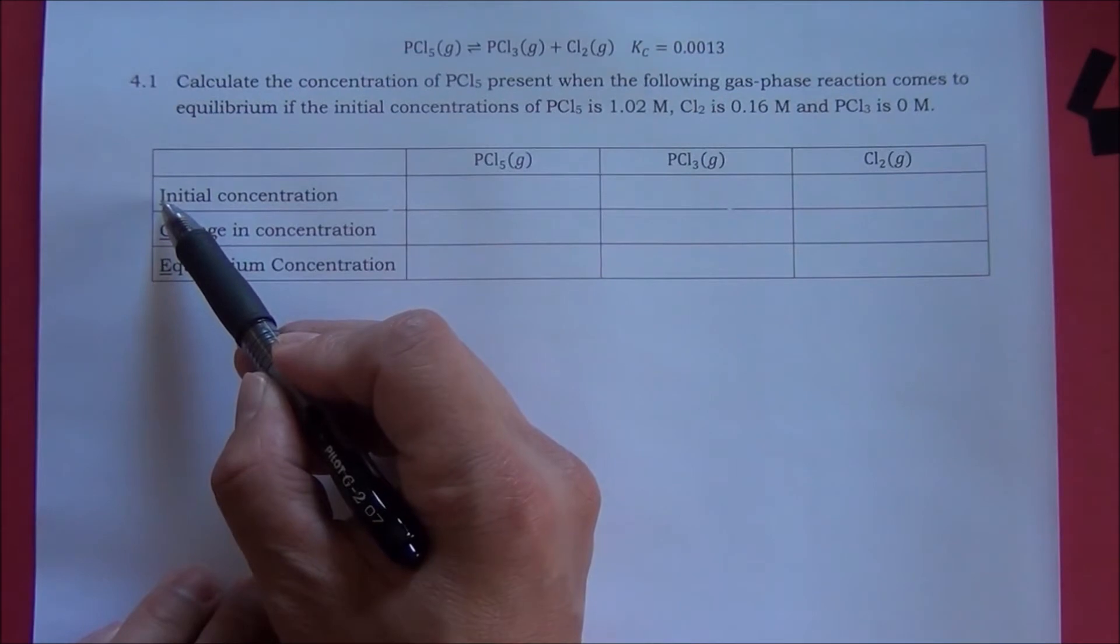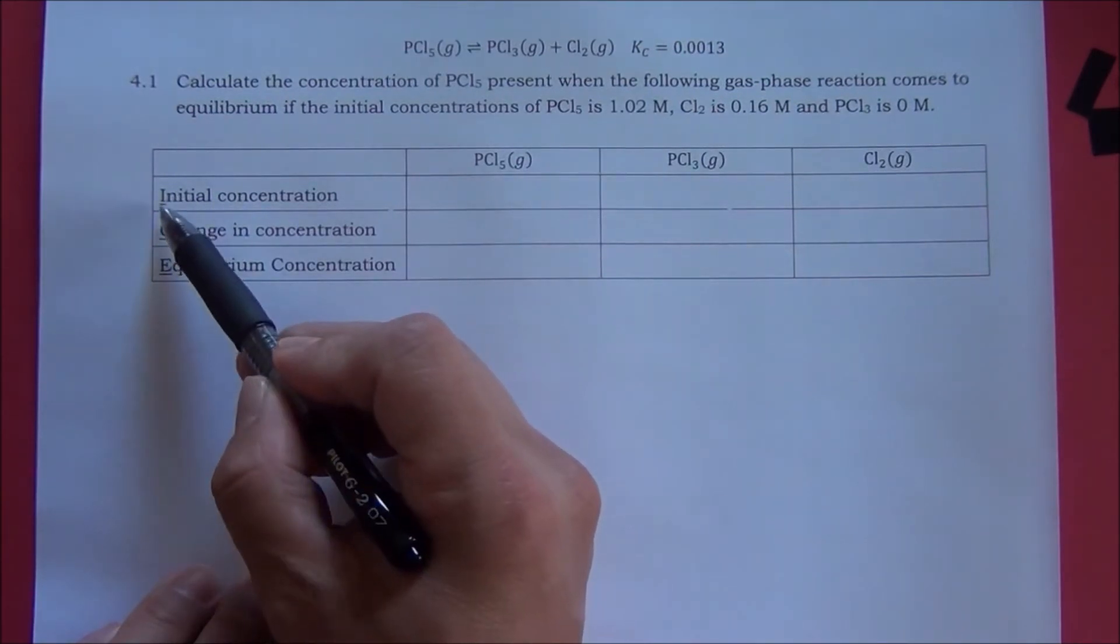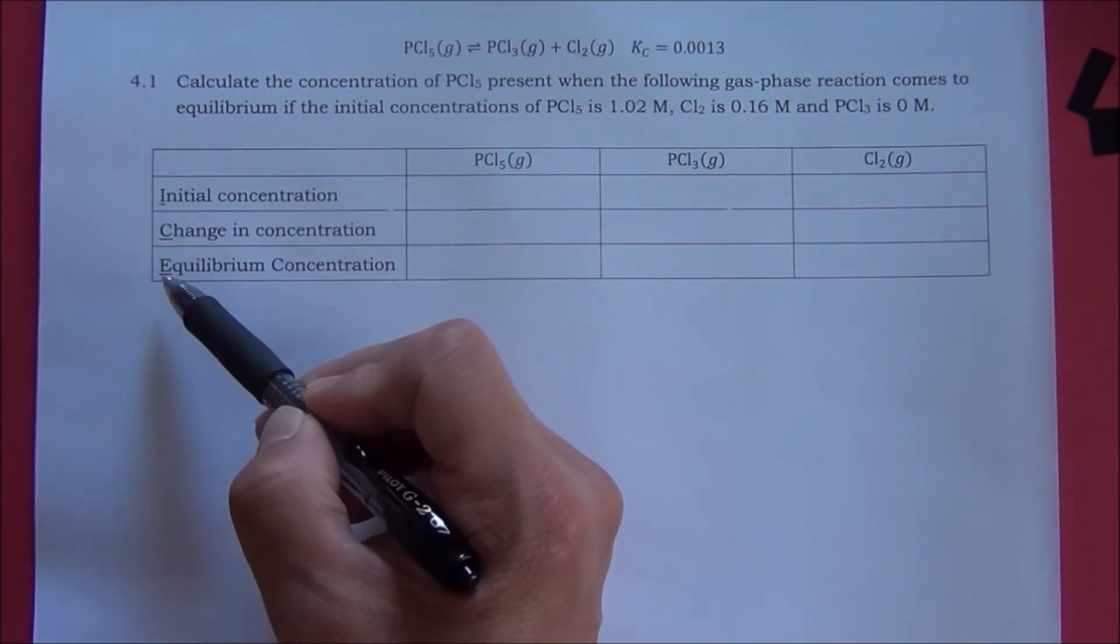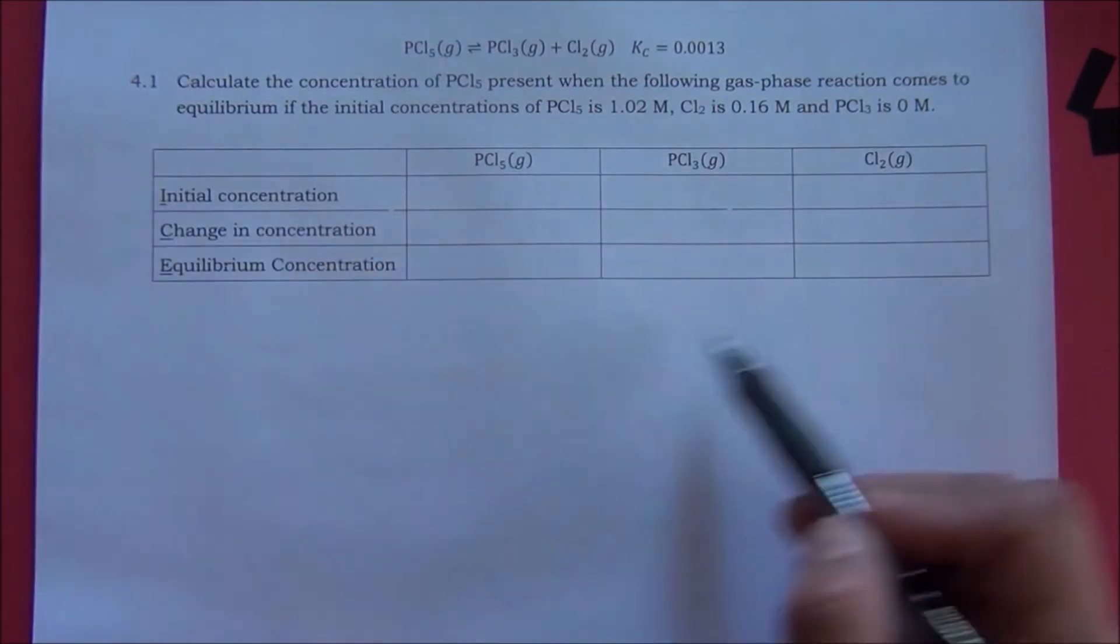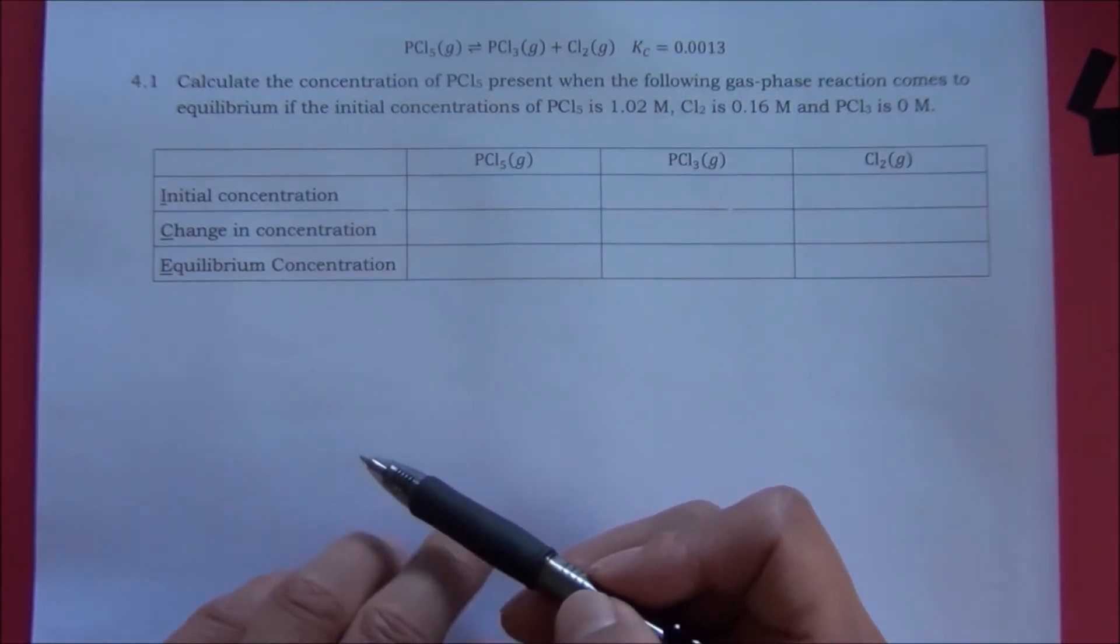As you may have already noticed, the first letter of the three rows are I, C, E. That's why we call this table an ICE table. Let's fill the table with the information provided.